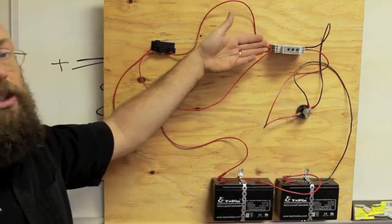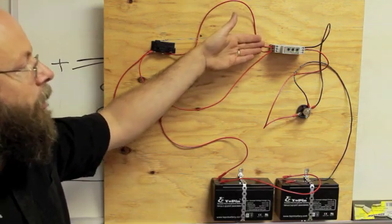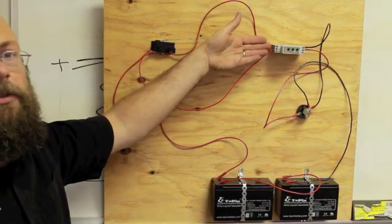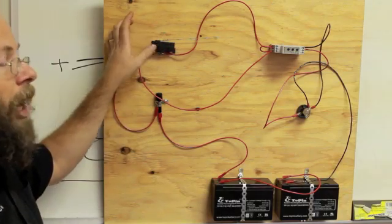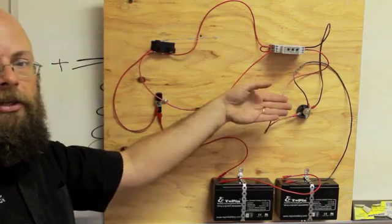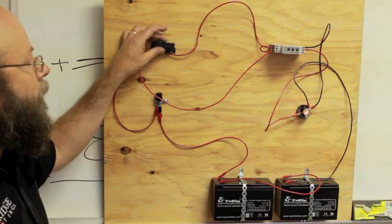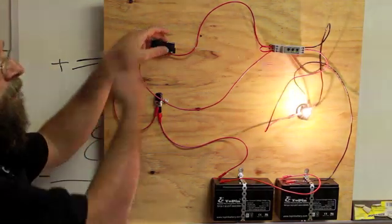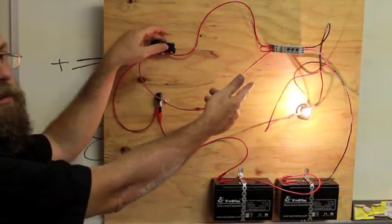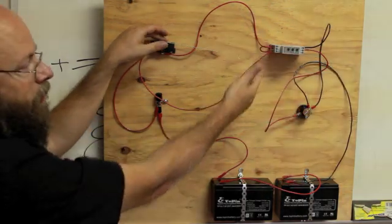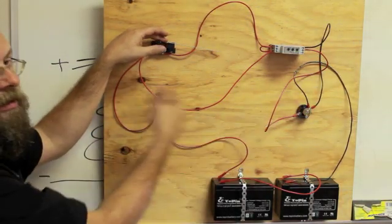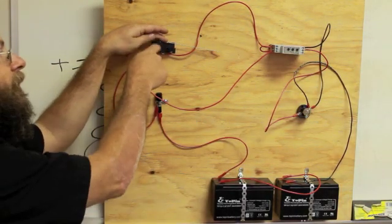The relay could be set to do other functions. This particular relay has six or seven different functions. Whenever this switch turns off, it could turn the light on for a period of time. And also, if you hold the switch for longer than five seconds, depending on the function, in this case, it's set to go off, even if this is still on.